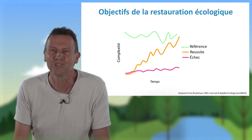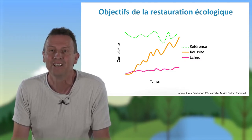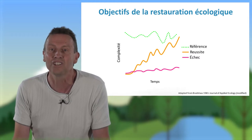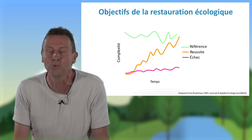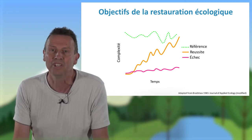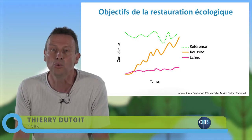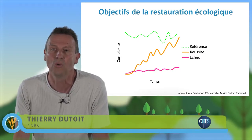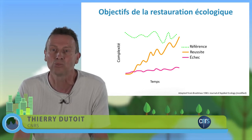Quels sont les objectifs de la restauration écologique ? On considère en matière de restauration écologique que les objectifs sont de remettre l'écosystème dégradé sur une trajectoire qui va lui permettre d'atteindre une référence qui existe encore ou qui n'existe plus. Cette référence a elle-même des oscillations, et le succès de la restauration écologique existera quand ces deux courbes seront superposées — contrairement à la courbe de l'échec, où on n'a pas réussi à réintroduire des espèces ou à remettre en place des fonctions.